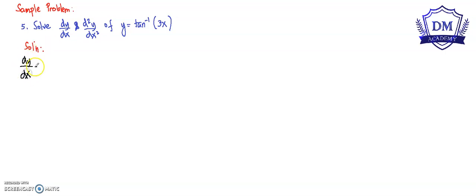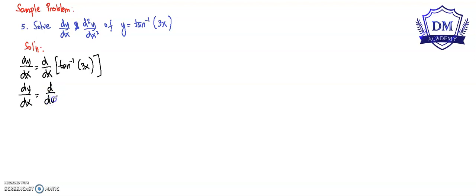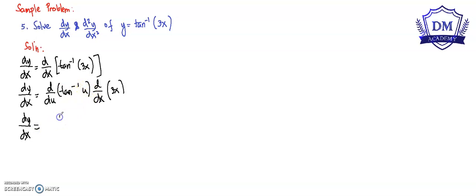The dy/dx, or the first derivative, is equal to the d/dx of the inverse tangent of 3x. Using the chain rule, this is the derivative of the inverse tangent of u multiplied by the d/dx of 3x. The derivative of inverse tangent of u is equal to 1 all over 1 plus u squared. Multiplied by the derivative of 3x, that is 3, giving us 3 all over 1 plus u squared.